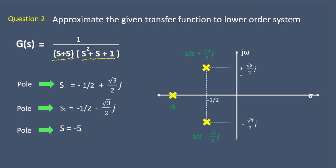First, let us plot all the poles on the s-plane. We have two complex poles at −1/2 ± (√3/2)j and one real pole at s = −5. Using the concept of dominant pole, the pole nearest to the origin is the dominant pole. The two complex poles are dominant since they are closer to the origin compared to the pole at s = −5.